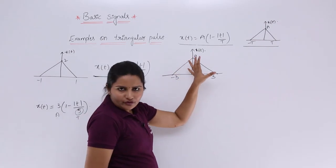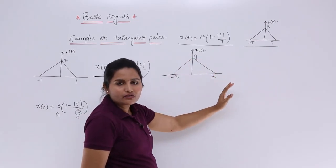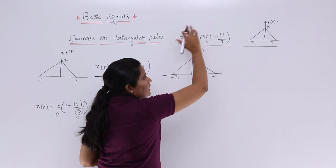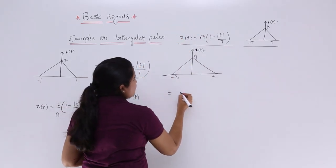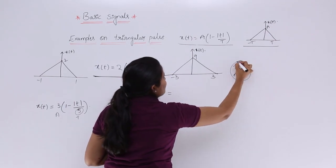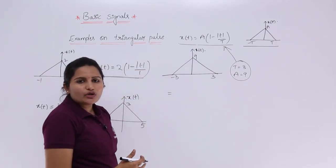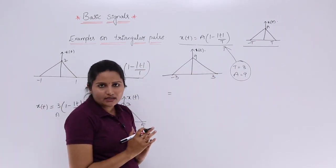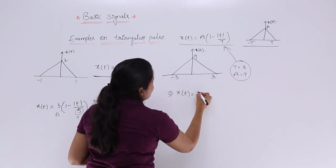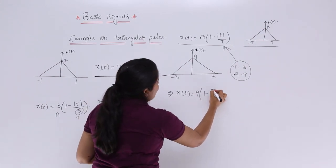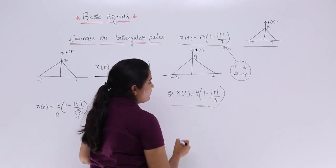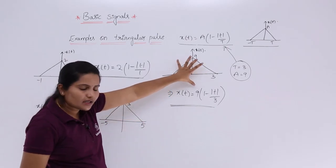Now, if your diagram is given and you are asked to find the equation for this triangle, you compare with the standard one and write the changed equation. Here, comparing the two, T = 3 and A = 9. Substituting these values into the standard equation gives X(T) = 9 × (1 − |T/3|). This is the equation for this particular diagram.